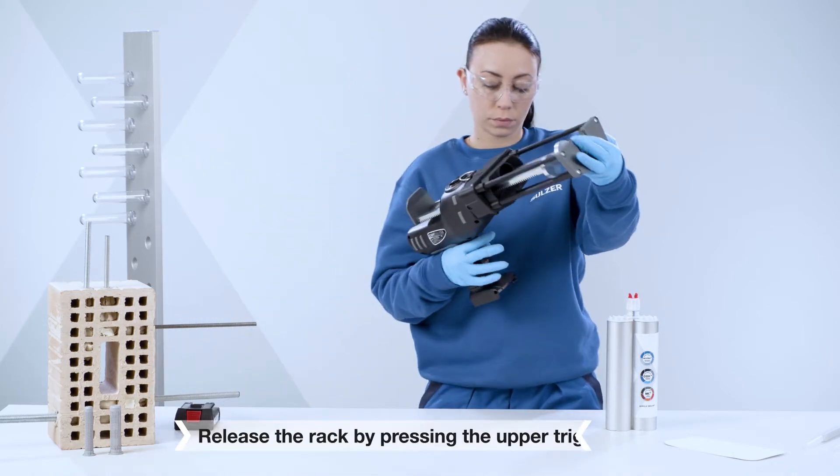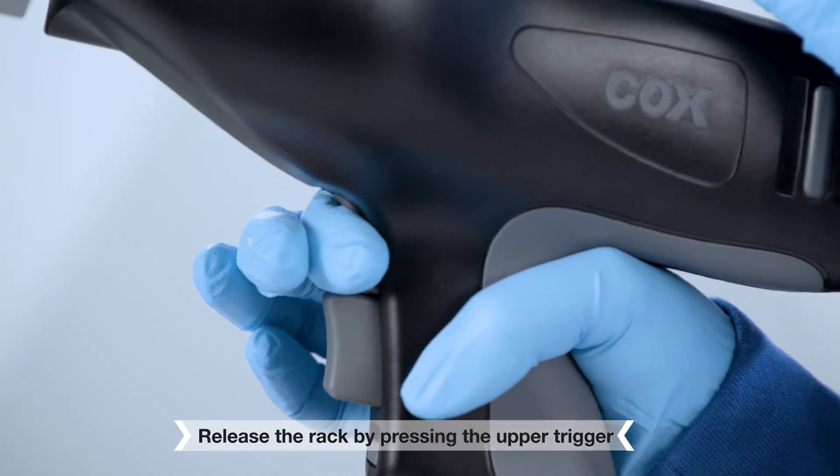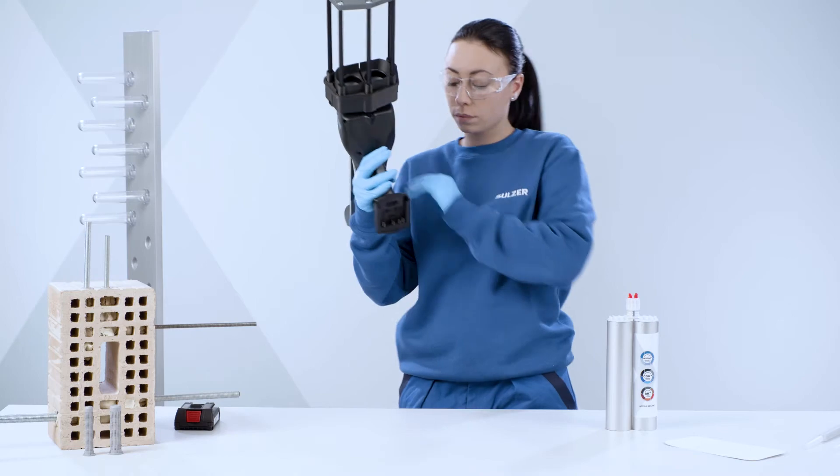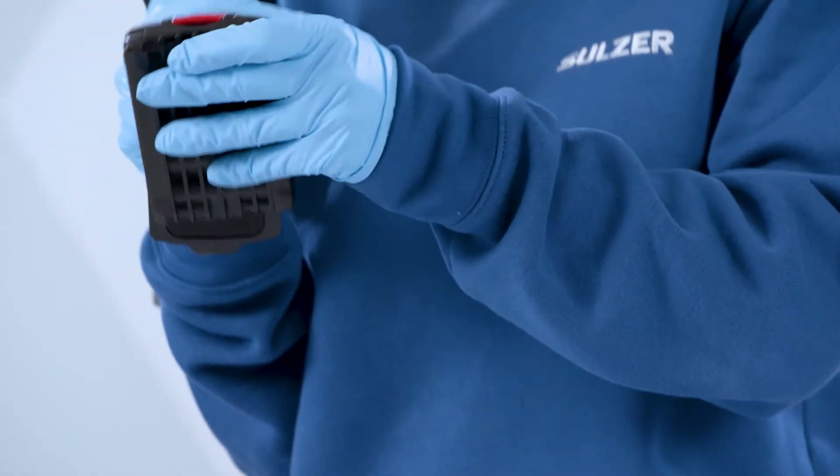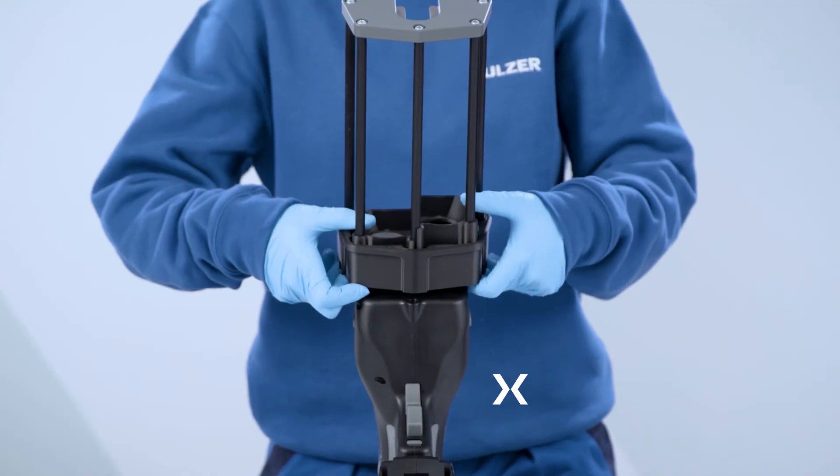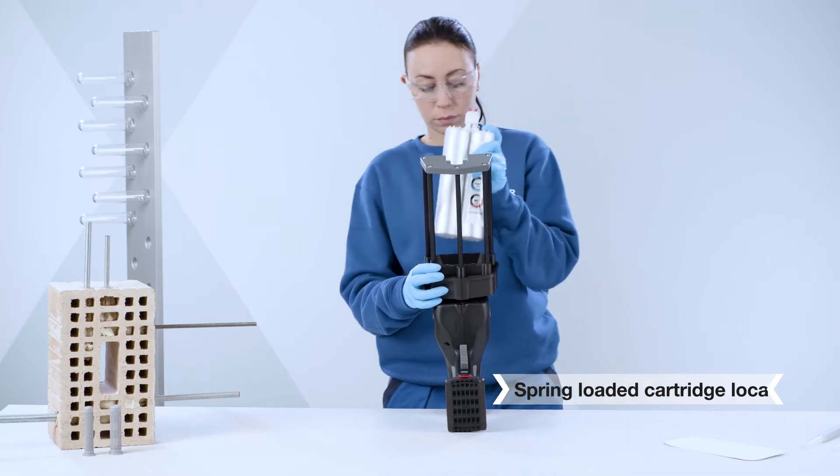Fully retract the rack by pressing the upper trigger to release, then pull back. The fuel cell indicates how much charge is in the battery, while the CoolPak system prevents the battery from overheating. The cartridge locator ensures a universal cartridge fit.